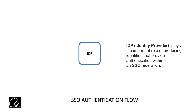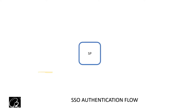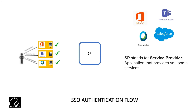The last entity is SP, which stands for Service Provider. Again, by the name you can understand what it does — it provides some service to you. SP means the applications that we want to access. In SSO we will have multiple SPs, and IDP will provide our identity to those SPs, i.e., to the applications or service providers.